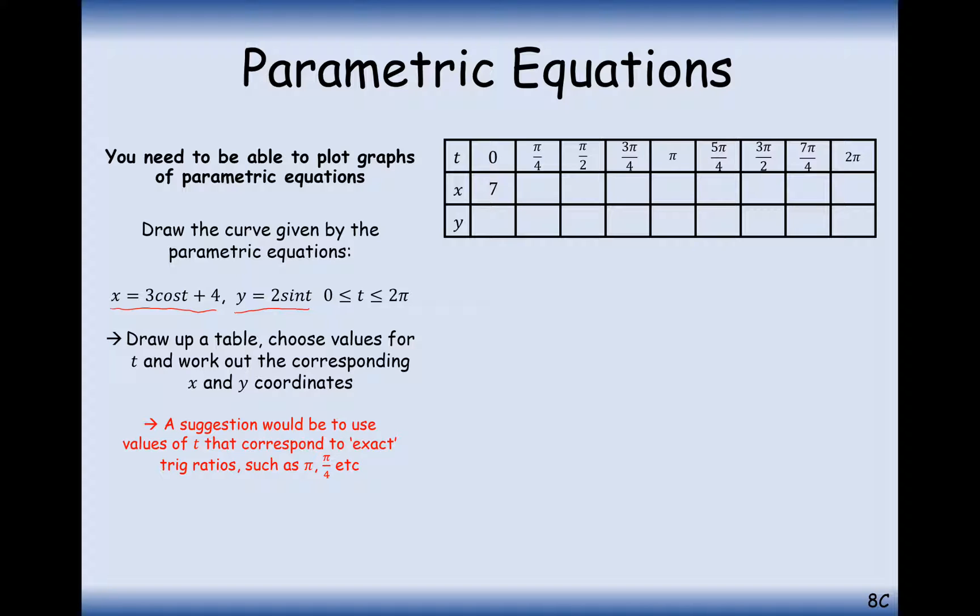So in this case here we're going to start with plugging in t equals 0 and we get 3 plus 4 is 7 and continue doing that going all the way through. Some of your answers may come out as thirds but I think for drawing the graphs it will be easier to have them in decimal form.